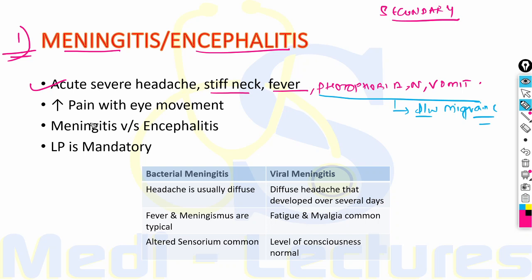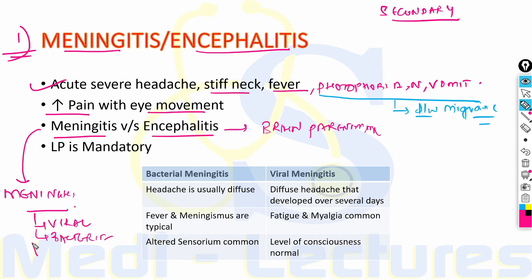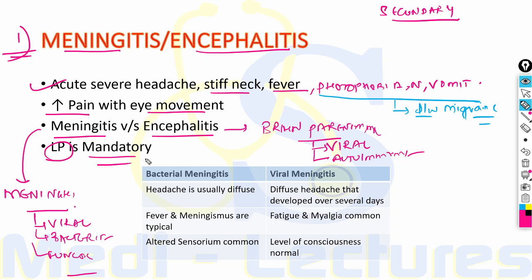Meningitis is the inflammation of the brain meninges, while encephalitis is the inflammation of brain parenchyma. Meningitis can be caused by viral, bacterial and fungal infections. Encephalitis is usually due to viral infection or autoimmune causes. Lumbar puncture is mandatory in making the diagnosis. When differentiating bacterial versus viral meningitis: in bacterial meningitis, headache is diffuse with typical fever and signs of meningismus; in viral, diffuse headache develops over several days.